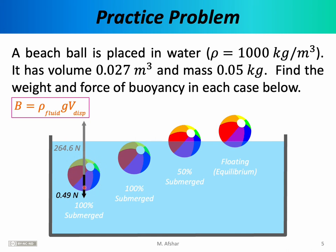In scenario two, weight is again 0.49 newtons, since mass and gravitational acceleration have not changed. Buoyancy is again 264.6 newtons. Once again the beach ball is 100% submerged, so the volume plugged into the equation is 0.027 cubic meters. The key point here is that the force of buoyancy doesn't depend on depth — so long as the ball is 100% submerged, we get the same buoyant force regardless of whether it's at a large or small depth.